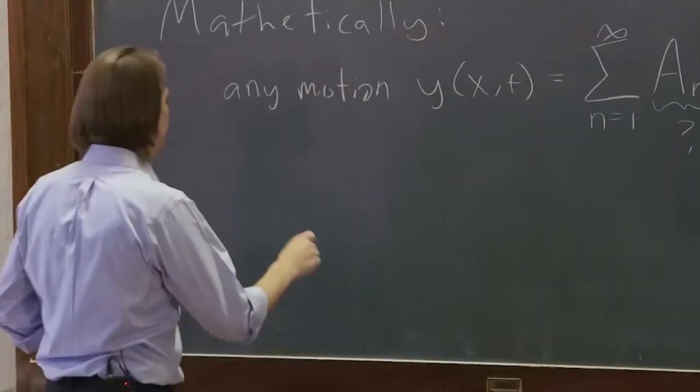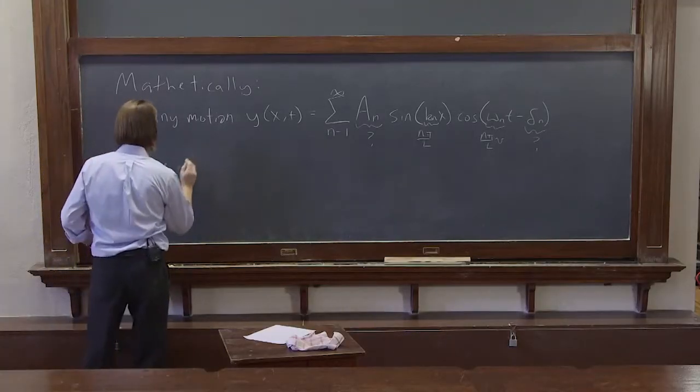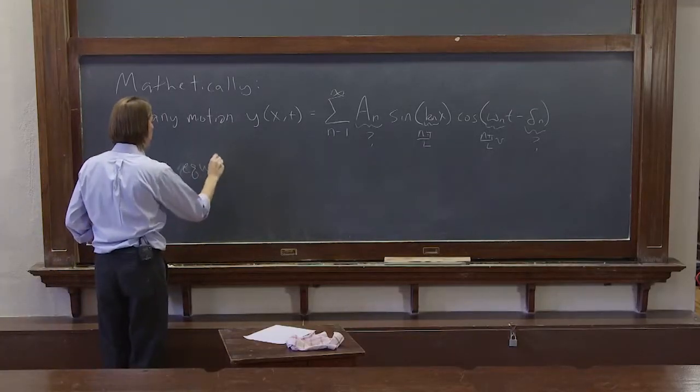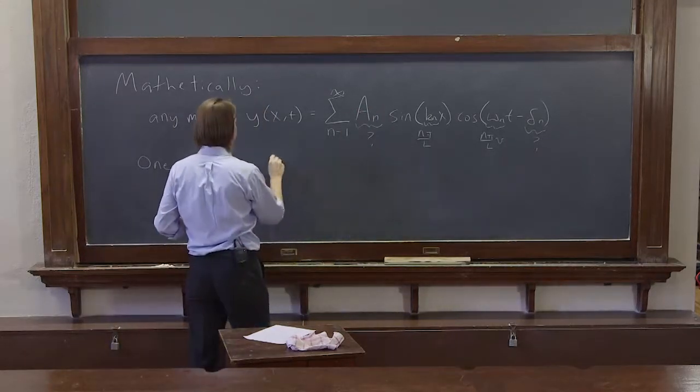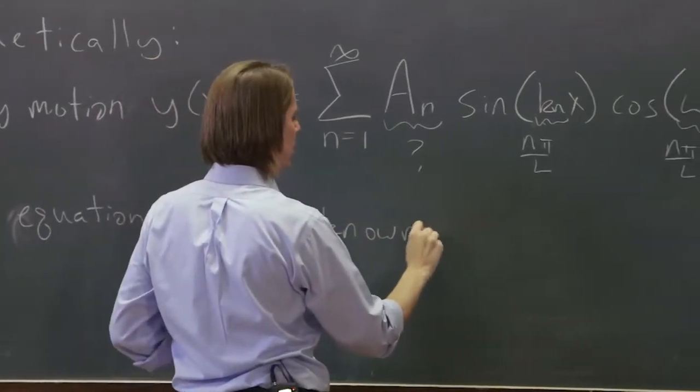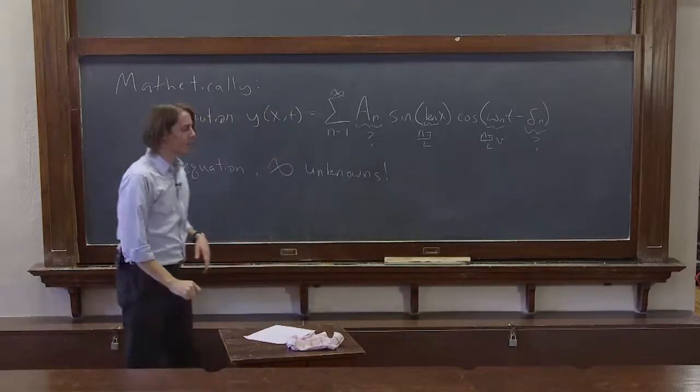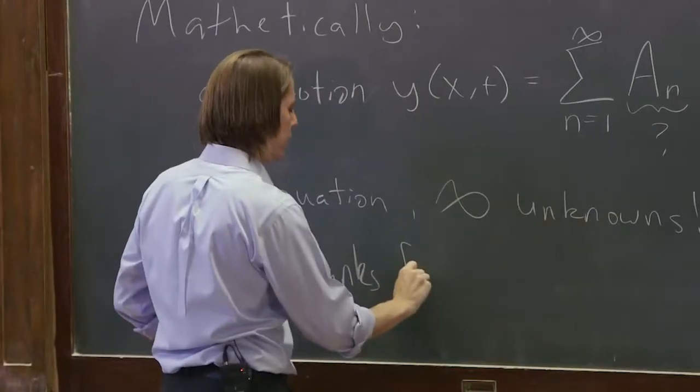So what Joe Fourier has given us is one equation, and infinity unknowns. That's not very useful, thanks for nothing.